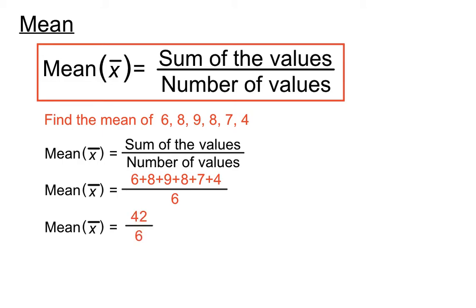We have 42 on the top and 6 on the bottom. 42 divided by 6 goes in 7 times, so we've found that the mean or the average of those values is 7 on this occasion.